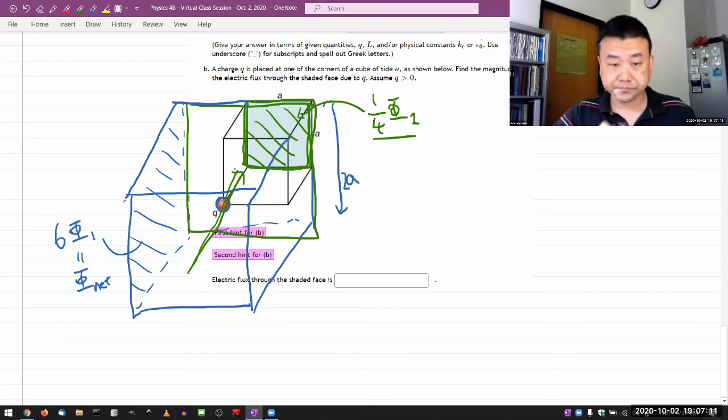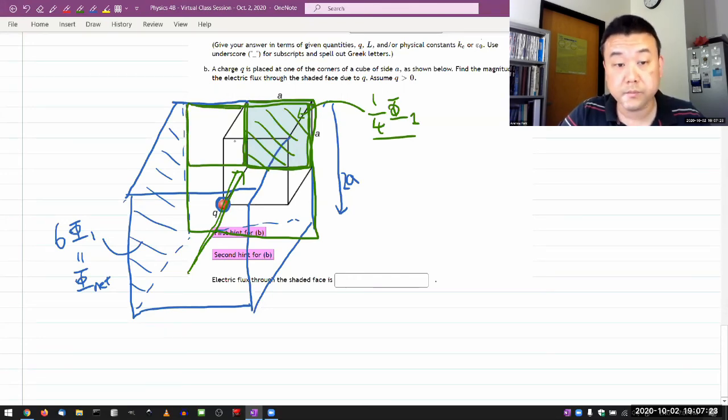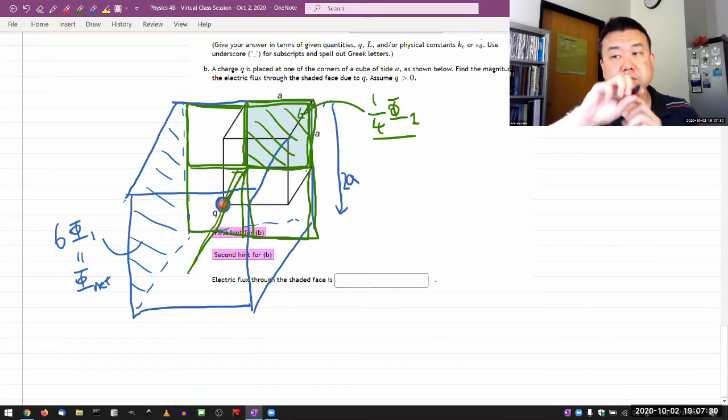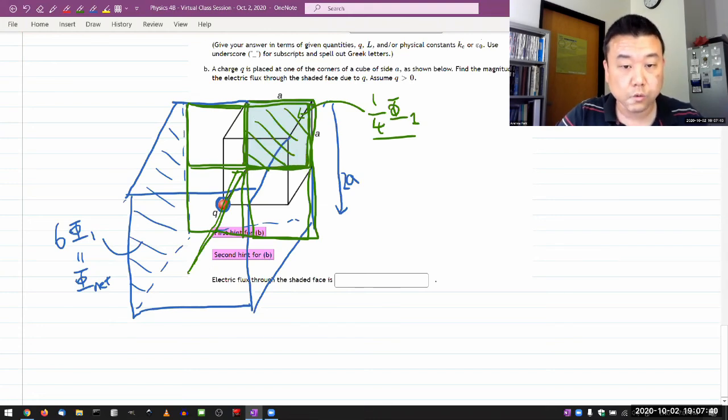So I can imagine a rotation operation around an axis that's going through the charge pointing that way. And as you imagine rotating the cube 90 degrees each time, you will see this area move over to this portion of the square face, and then this portion of the square face, and then this portion of the square face. And as you do that 90 degree rotation operation each time, you are not actually changing anything, which means the flux through this particular quarter of the area should be same as flux through any other quarter of the area.